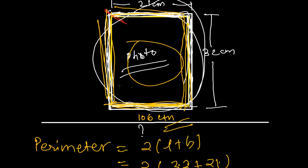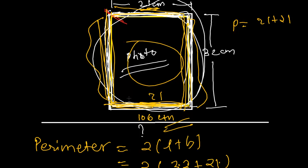You can find out the perimeter in another way also — simply by adding all sides. This is 21 centimeter, so this will also be 21 centimeter: 21 plus 21 twice. And this will be 32, so this part will also be 32: 32 plus 32. If you add all of these you will get again 106 centimeter.